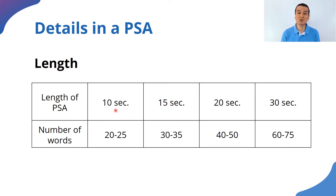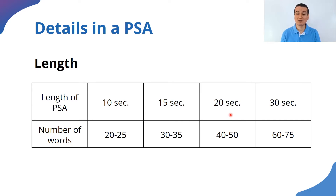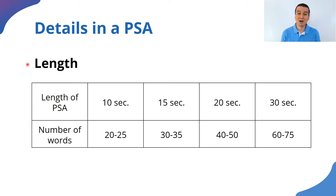For example, if your announcement is going to last 10 seconds, you can only write 20 to 25 words. If it is going to last 15 seconds, you can only include about 30 to 35 words. For 20 seconds, you have only 40 or 50 words. For 30 seconds, you have 60 or 75. And sometimes you have a full minute, but that is up to the station — for example, the radio station broadcasting your announcement decides how much time they give you. Based on that, you need to plan carefully so that your announcement is just the right length.